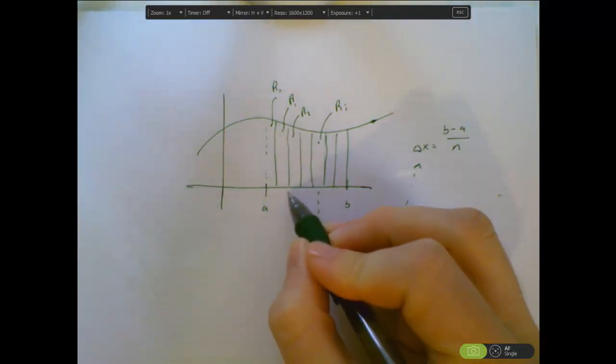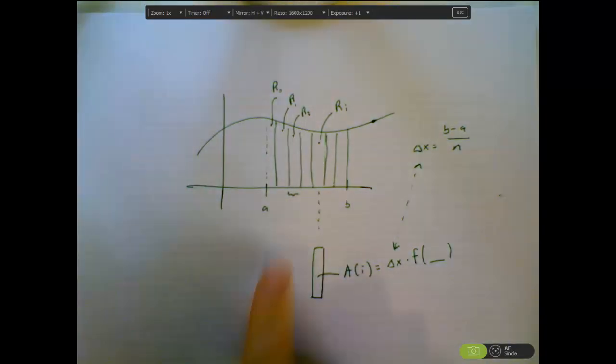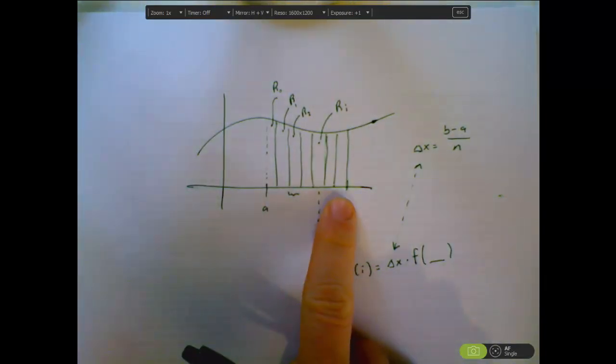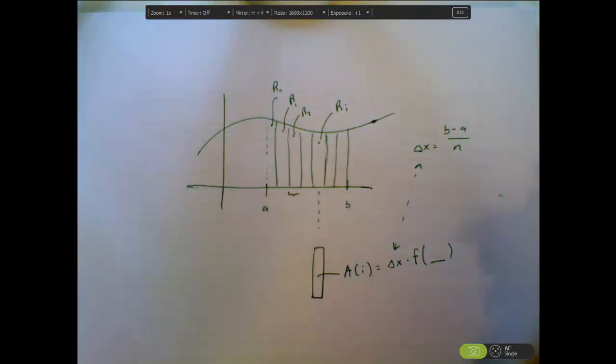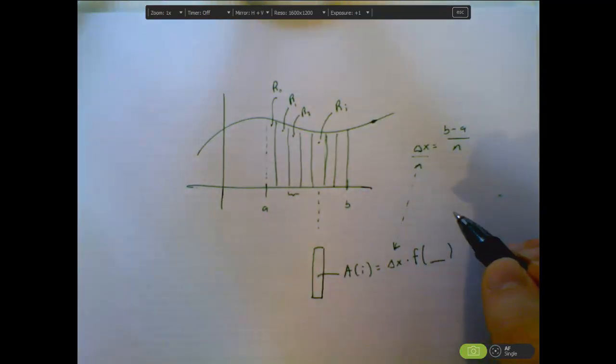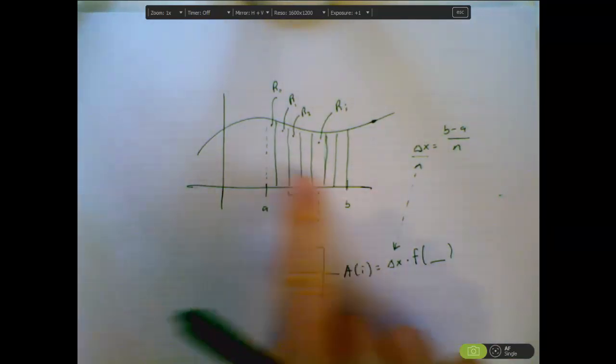Alright, so these rectangles are all the same width. They're whatever this length is divided by the number of rectangles I have. So I'm going to call that delta x. That's the width of the rectangle and it's b minus a divided by n where n is the number of rectangles.